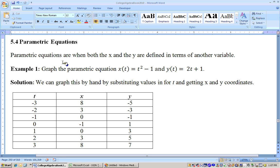Okay, section 5.4 is on parametric equations. Parametric equations are when both the x and y are defined in terms of another variable, sometimes referred to as a dummy variable. That variable could be t or maybe theta or z, but it's a different variable. Often we use t for time, or maybe we might use theta for some angle measurement.